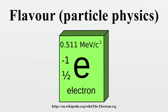Quarks: All quarks carry a baryon number B equals one-third. They also all carry weak isospin T3 equals plus or minus one-half. The positive T3 quarks are called up-type quarks and negative T3 quarks are called down-type quarks. Each doublet of up- and down-type quarks constitutes one generation of quarks. For all the quark flavor quantum numbers, the convention is that the flavor charge and the electric charge of a quark have the same sign.